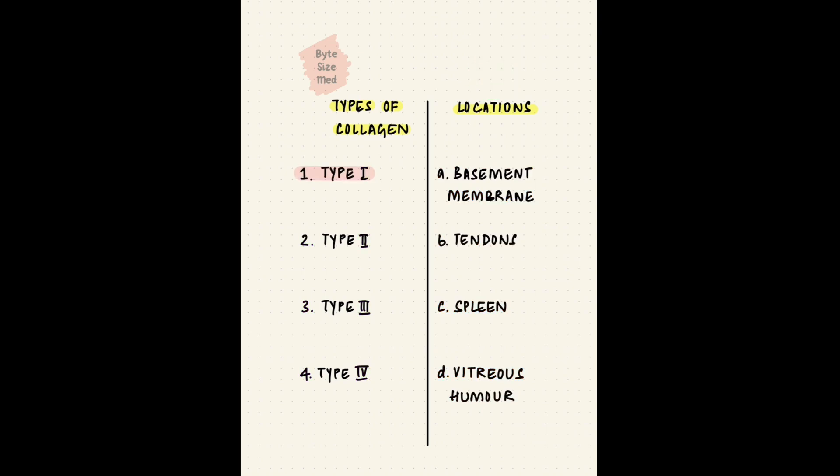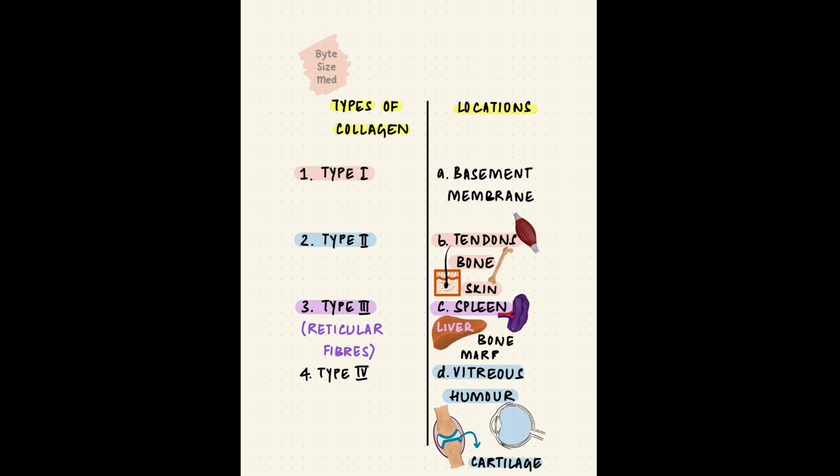Type 1 collagen is found in tendons. It's also found in bone and the dermis of skin. Type 2 collagen is in the vitreous humor of the eye. It's also found in cartilage. Type 3 collagen are actually reticular fibers. They're in the spleen, liver, and bone marrow. Type 4 collagen forms the floor of epithelial cells. That would be the basement membrane. 4 for floor.